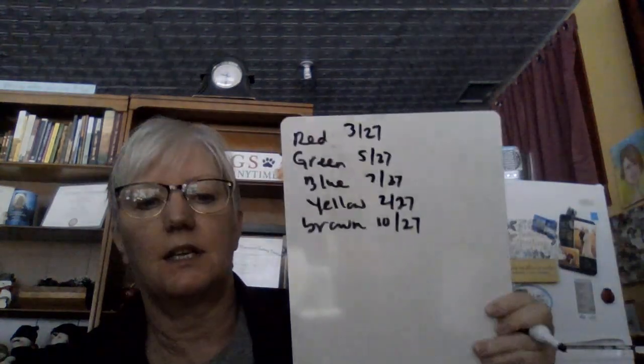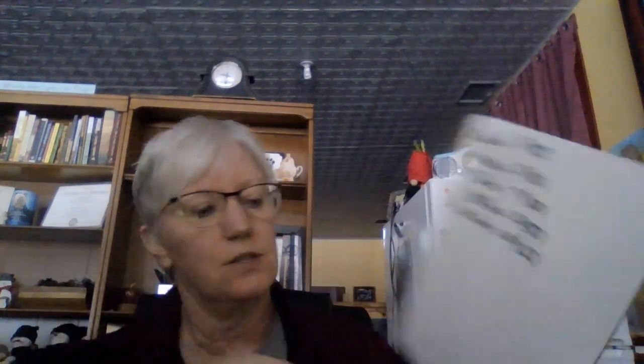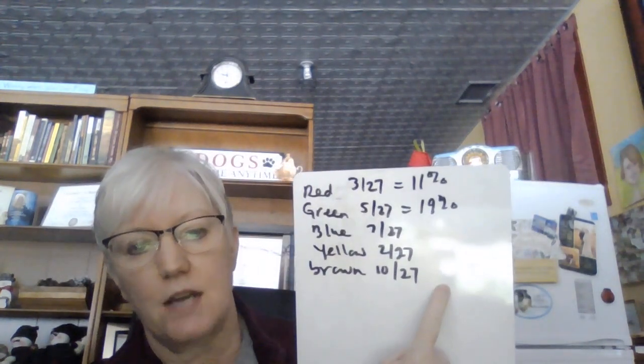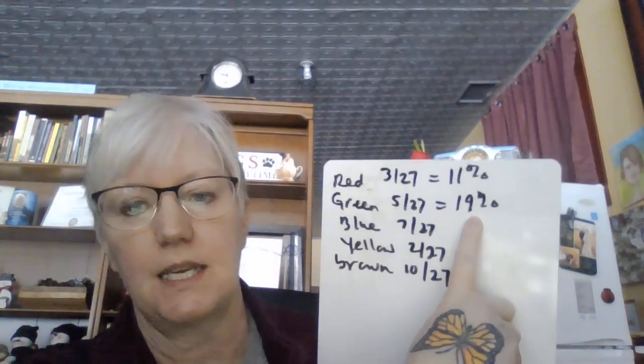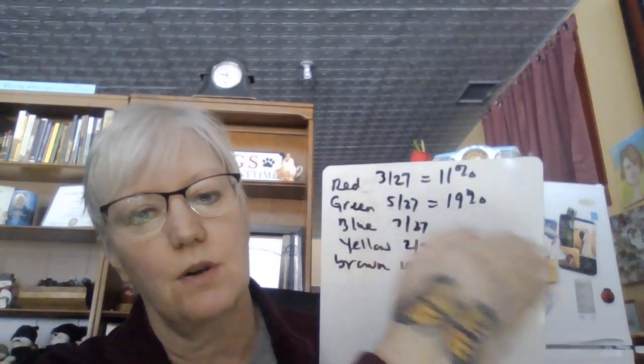Once I've turned these into fractions, I'm going to turn them into percentages. You divide top by bottom. So 3 divided by 27 is 0.111 repeating — so 11%. 5 divided by 27 is 0.185, and I'm going to round that up to 19%. Now, these percentages have to add up to 100, so since I rounded 18.5 up to 19, I should round the next one down if needed.